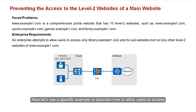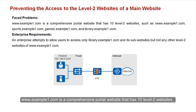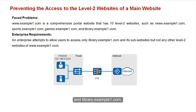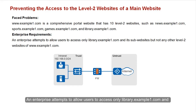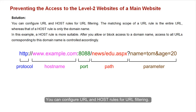www.example1.com is a comprehensive portal website that has 10 level 2 websites, such as news.example1.com, sports.example1.com, games.example1.com, and library.example1.com. An enterprise wants to allow users to access only library.example1.com and its sub-websites, but not any other level 2 websites of www.example1.com. You can configure URL and host rules for URL filtering.